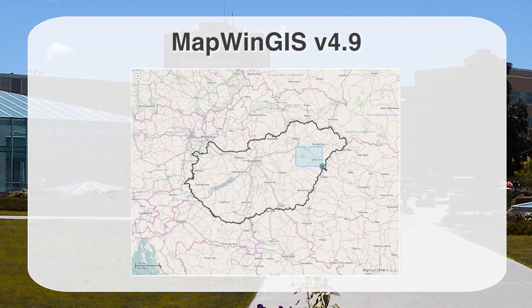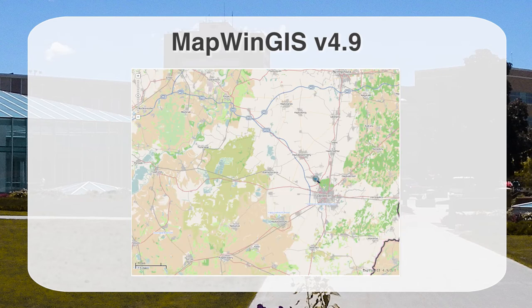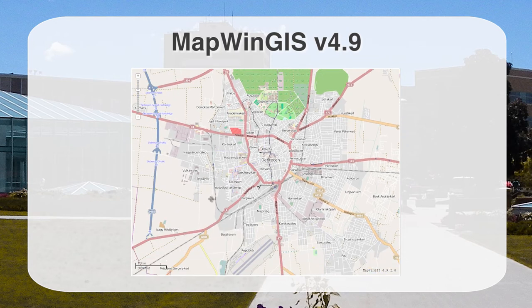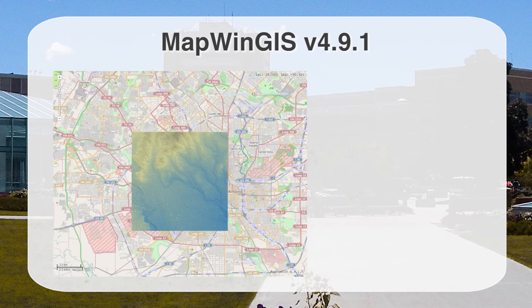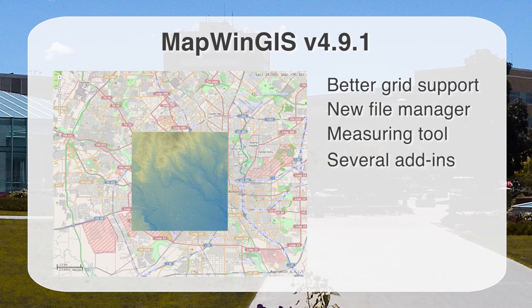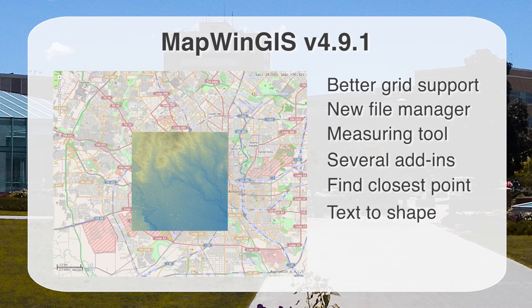Version 4.9 includes tiling support with providers such as OpenStreetMap, Google, and Bing, plus a native zoom bar built into the ActiveX control. With version 4.9.1, there is better efficient support for handling grids, a new file manager class, a measuring tool, and additional add-ins. In fact, 146 new functions were added, such as finding the closest points on a shape and importing from the well-known text format into a shapefile. Shapefile validation is also built into the ActiveX control.